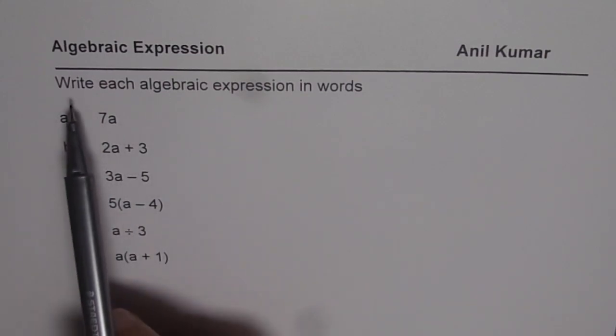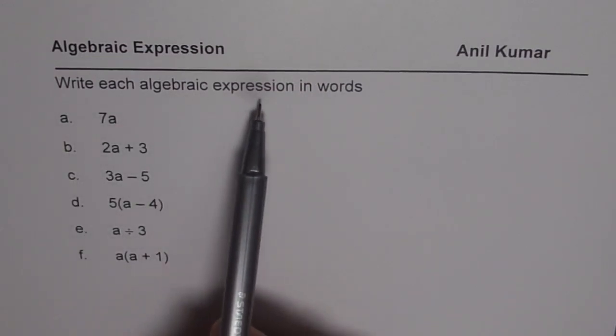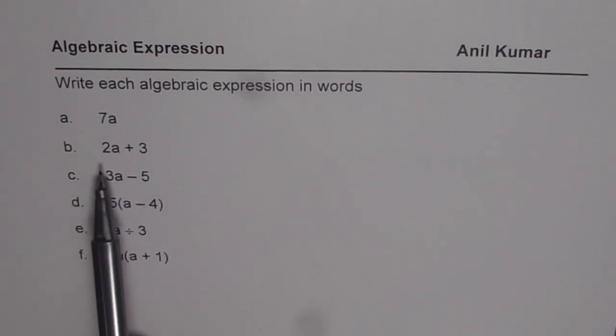So the question here is: write each algebraic expression in words. 7a, 2a plus 3, 3a minus 5, 5 times a minus 4, a divided by 3, and a times a plus 1.